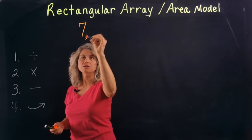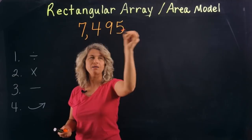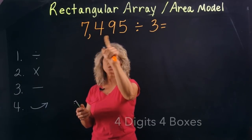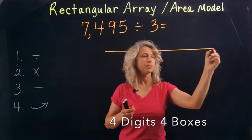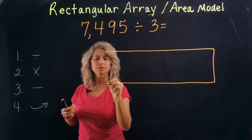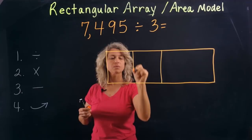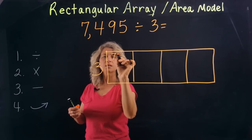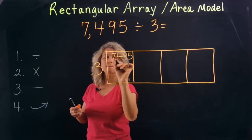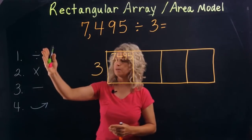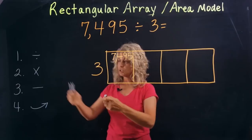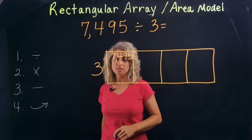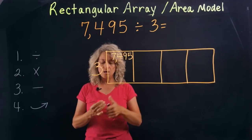Let's try 7,495 divided by 3. Because there are four digits, we will draw our area model with four boxes. Your divisor goes to the side and the dividend goes inside the first box. We'll continue and follow the steps we've already tried — they're written to the side as a helpful reference, which is good to have as you walk through these steps, especially as you begin this process.